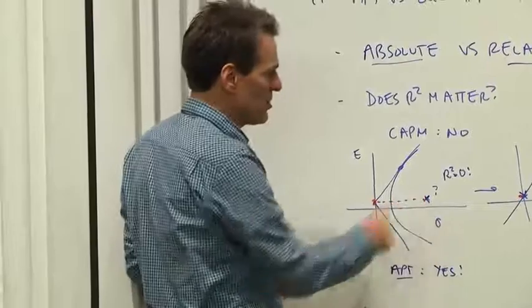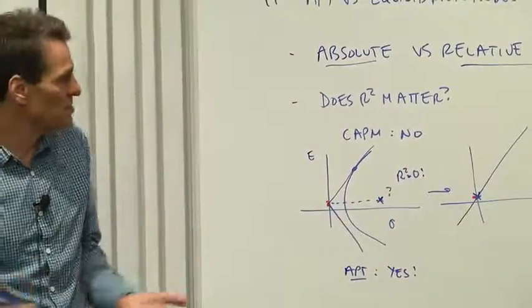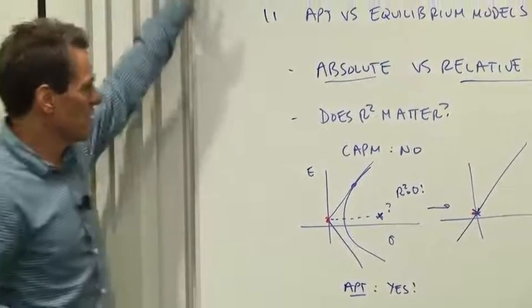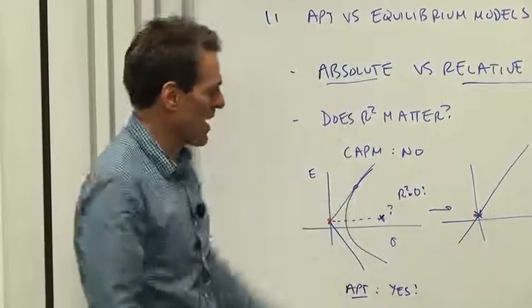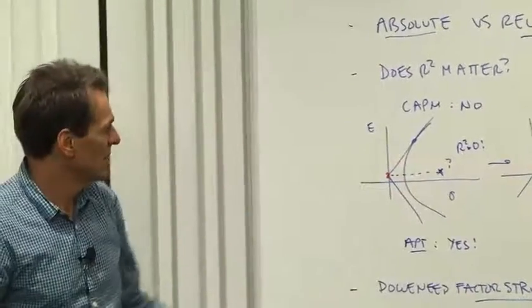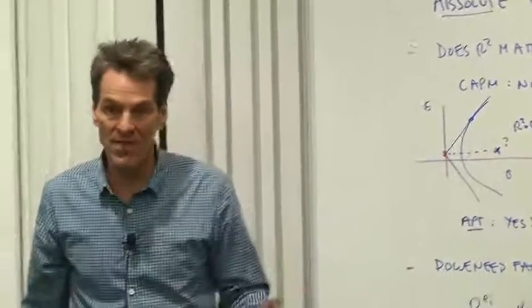The CAPM would treat it as a great success to say the expected return of that security is zero because the beta is zero. So the R squared being zero is not only irrelevant to the derivation of the CAPM, but it would be a point of pride.